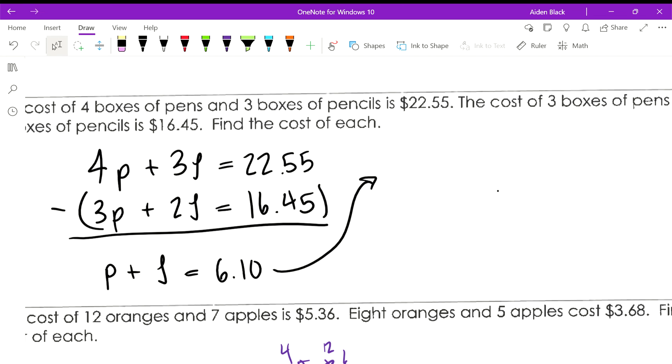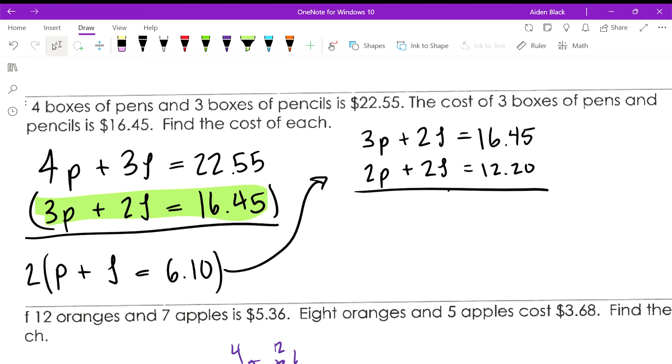And what we'll do is we can multiply this one by 2 so that we can take this equation and have it subtracted by this equation but multiplied by 2. So I'll rewrite 3 boxes of pens plus 2 boxes of lápiz pencils, $16.45. And then if we distribute this, we get 2 boxes of plumas pens plus 2 boxes of lápiz is, and 6.10 times 2 would be $12.20.